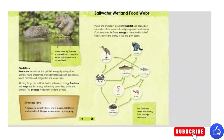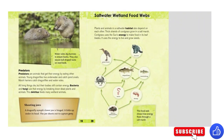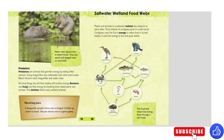Water voles dig burrows in stream banks and also weave ball-shaped nests on reed beds. Predators are animals that get their energy by eating other animals. Young dragonflies live underwater and catch pond snails. Marsh harriers catch dragonflies and water voles. All living things die, but their bodies still contain energy. Bacteria and fungi use that energy by breaking down dead plants and animals. This detritus feeds many wetland animals. A dragonfly's lower jaw is hinged and folds up under its head — the jaw shoots out to capture prey.